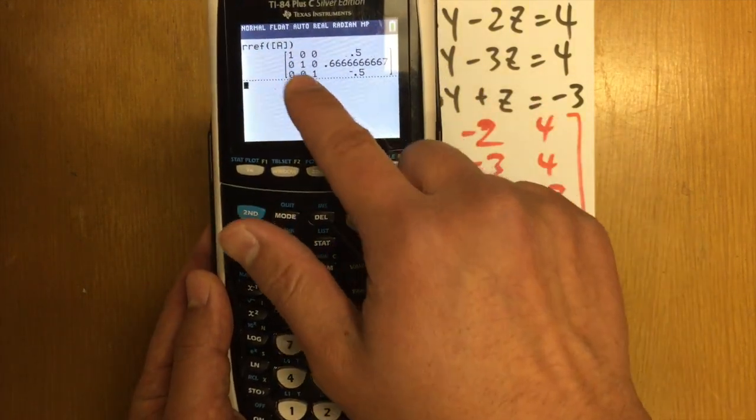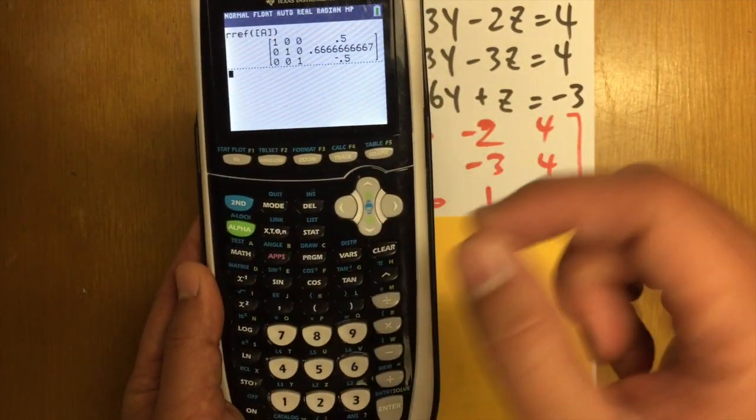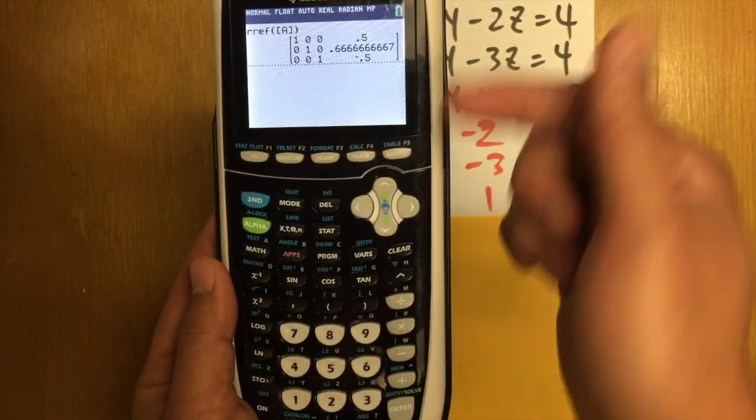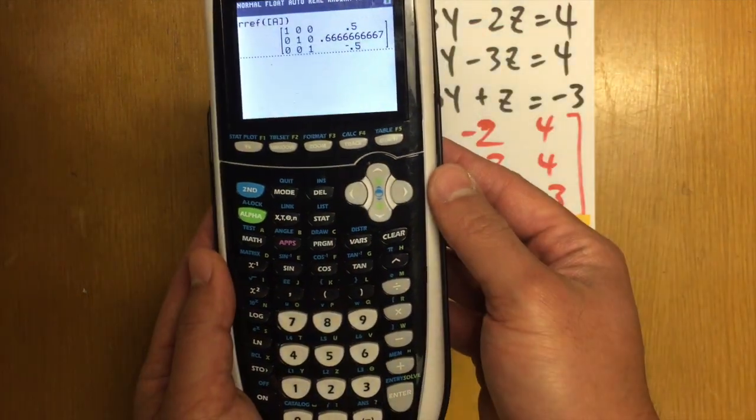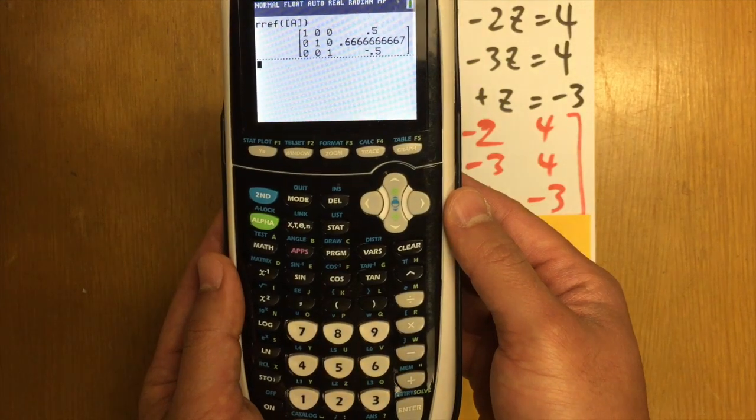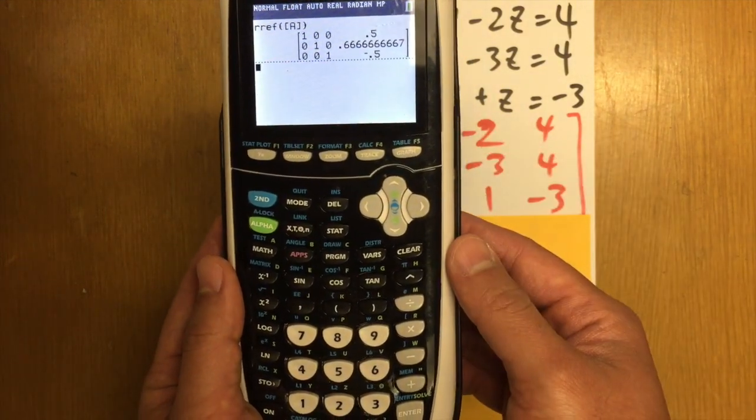As you can see, this is in the RREF form. One, one, one on the diagonals. And then you have all these zeros right here. And these are the answers. But these are the decimal numbers. That's not so good.